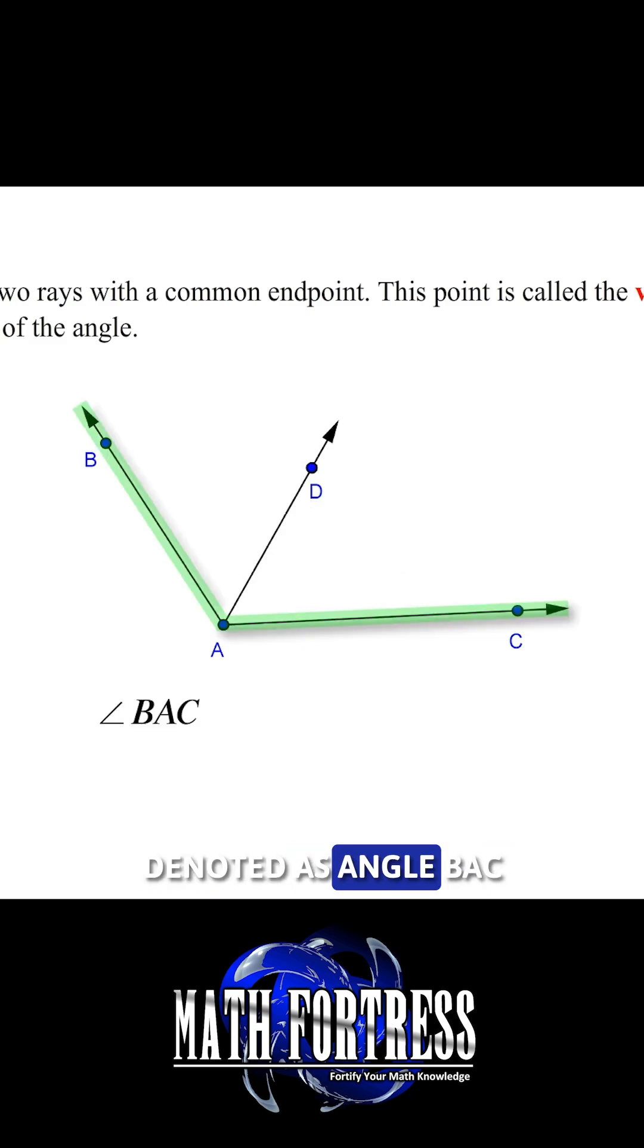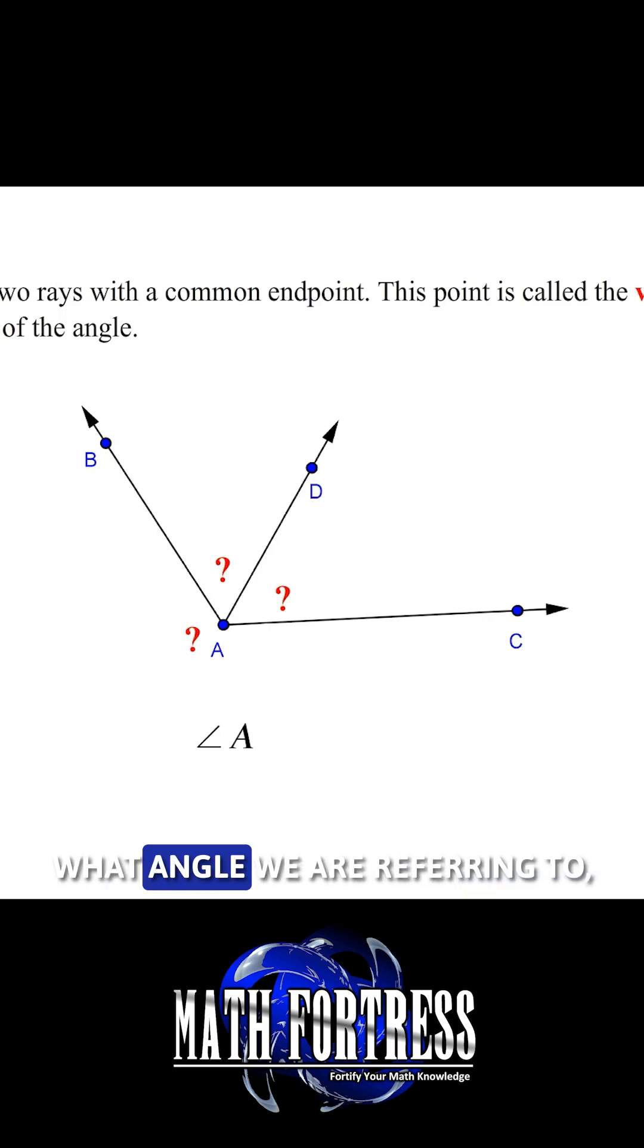And the third angle is denoted as angle BAC or angle CAB. Notice that if we try to denote any of the angles by using only one letter such as angle A, we will be totally confused what angle we are referring to because all the angles share the same vertex. So in this case it is really convenient to use three letters to name the angles.